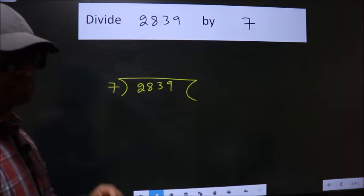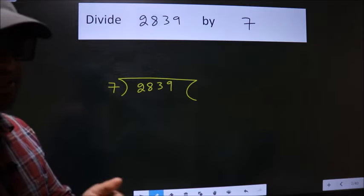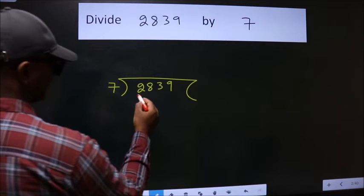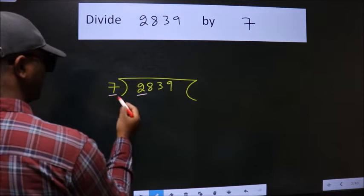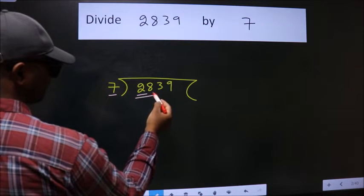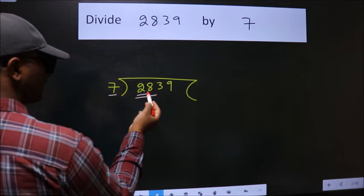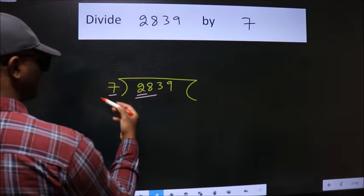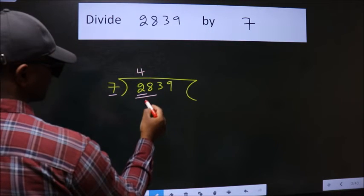This is your step one. Next, here we have two. Seven two is smaller than seven, so we should take two numbers: 28. When do we get 28 in seven table? Seven fours 28.